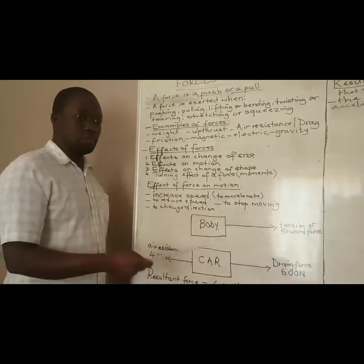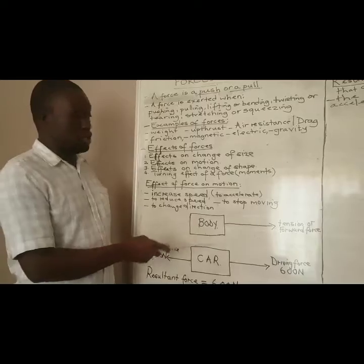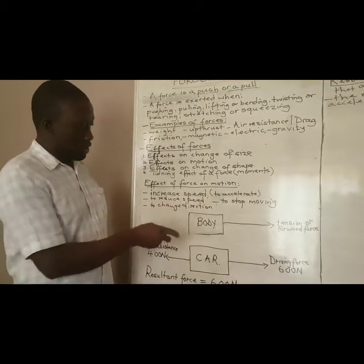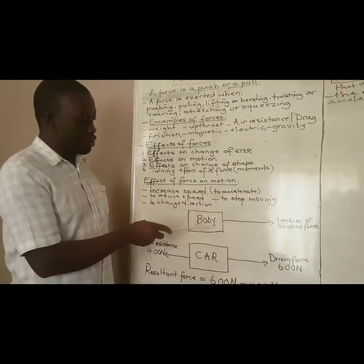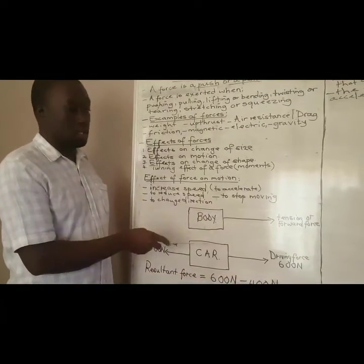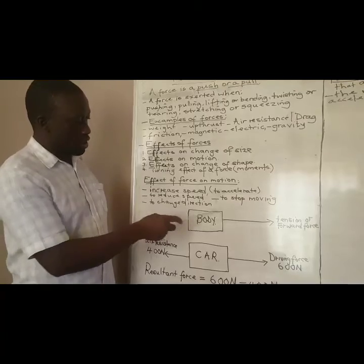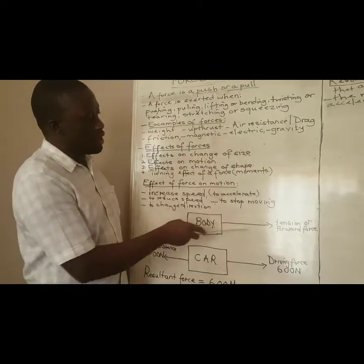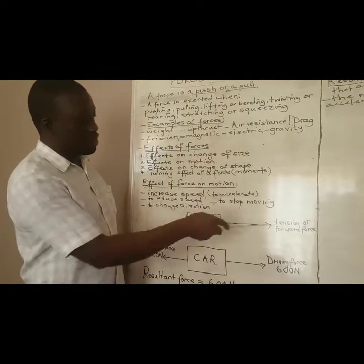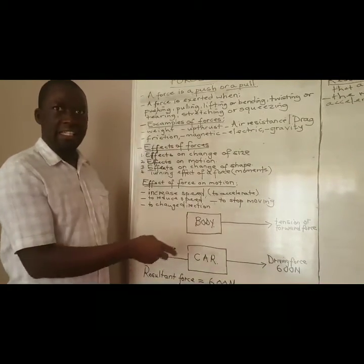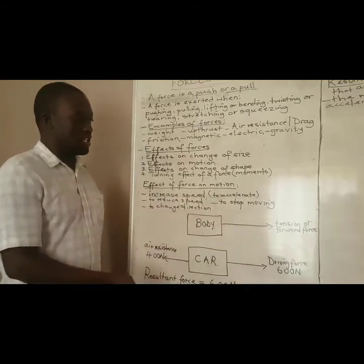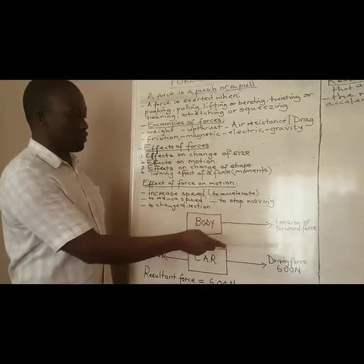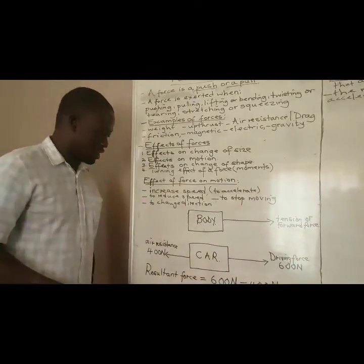When we represent our body and our force, we are going to use these diagrams. An object is represented with a rectangle, and the force is represented with a line with an arrow showing the direction. For example, we have a forward force or driving force indicated here.